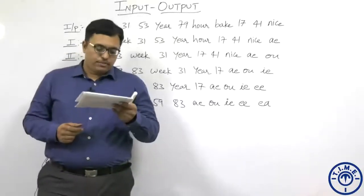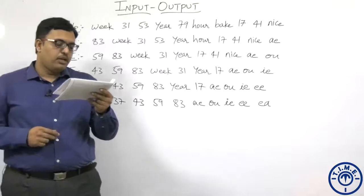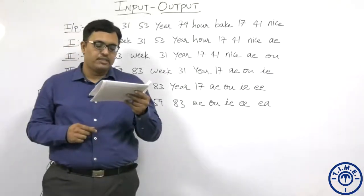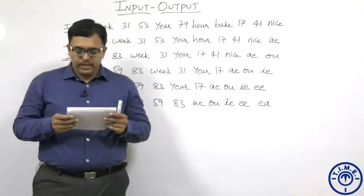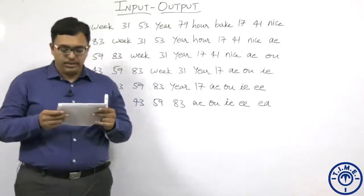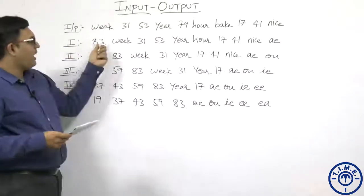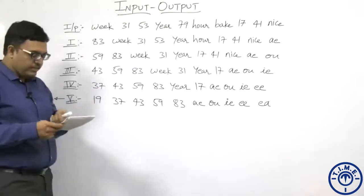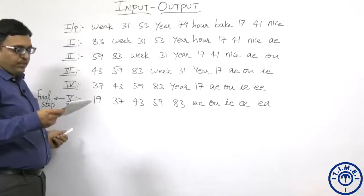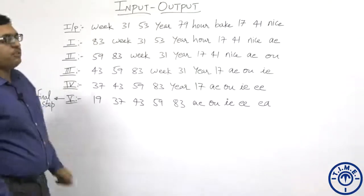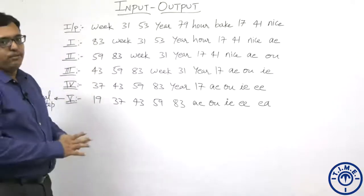Coming to the next set of questions: a word and number arrangement machine, when given an input line of words and numbers, rearranges them following a particular rule. The following is an illustration of input and rearrangement; all the numbers are two-digit numbers. This is the input given and these are the steps, and step number 5 is the final step. We have to see what logic and method is being followed.